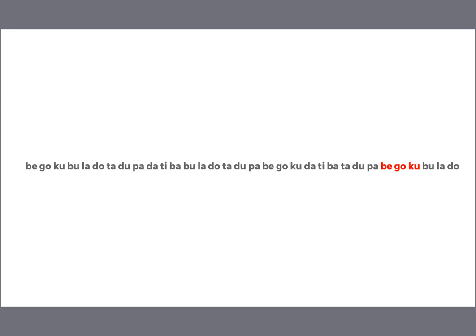In fact, that's really the only way to identify the words in this language, because there are none of the pauses or changes in intonation that might be used as cues for word boundaries in real languages. If you listen to this language for long enough, you would eventually notice that the syllables reliably occur in groups of three. B-goku always occurs as a unit, as does buladu, tadupa, and datiba.